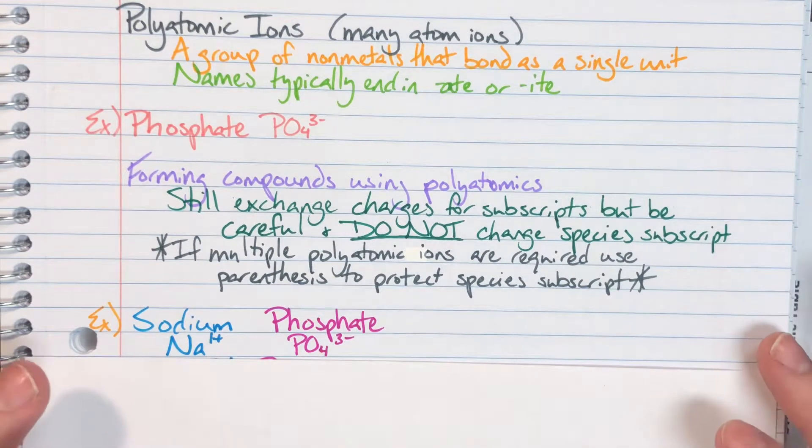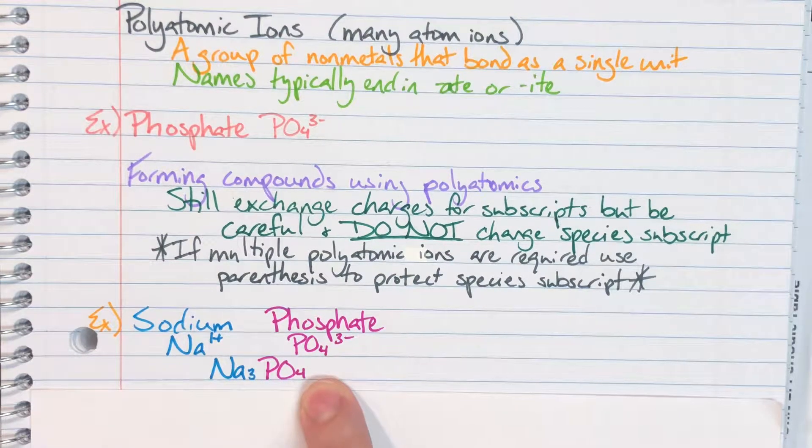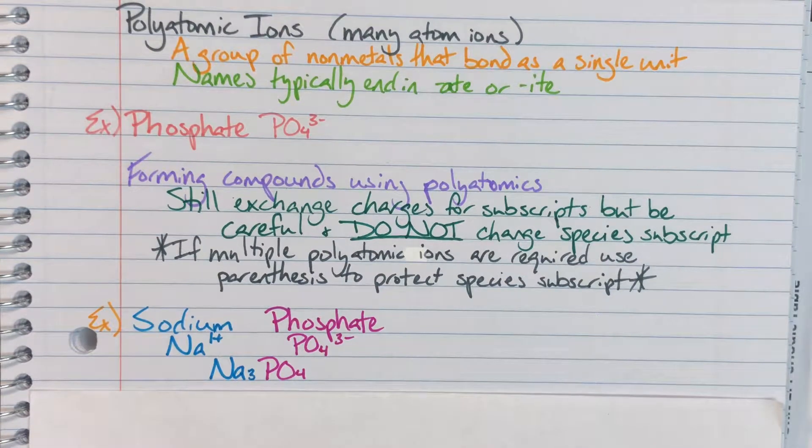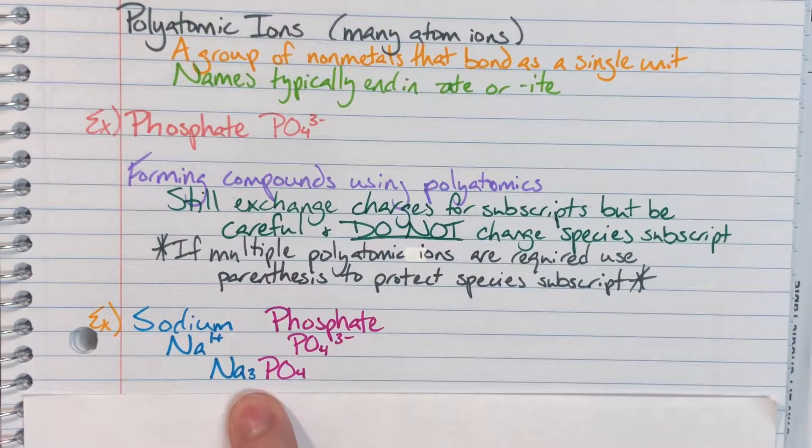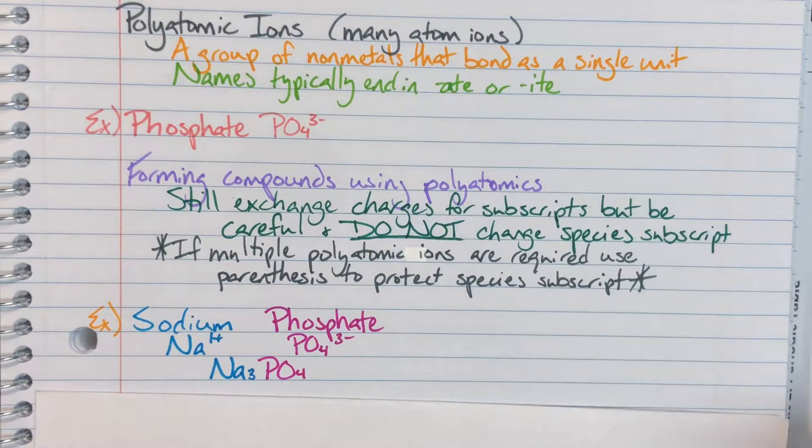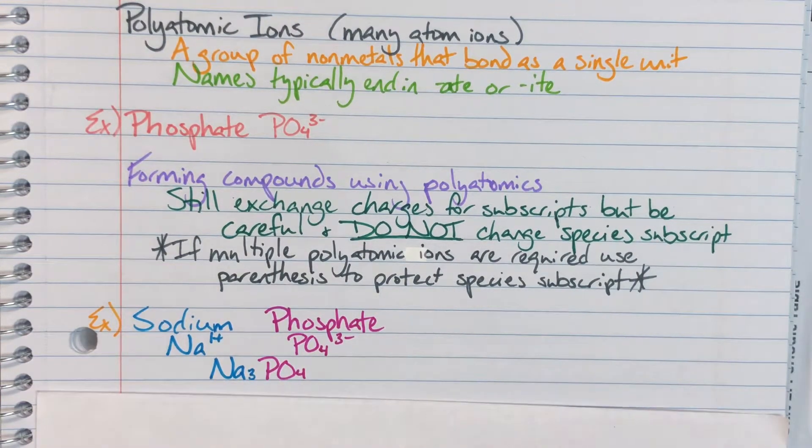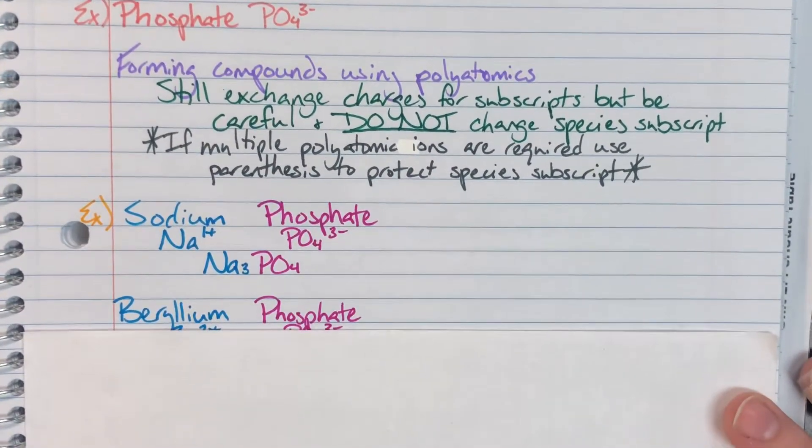Now when I exchange charges for subscripts, I am going to give that one from sodium to phosphate. We do not write ones. The presence of PO4 is in itself a denotation that there is at least one phosphate. Since they function as a singular unit, they do not need that one. They are implied, whereas the phosphate's charge of three will become sodium subscript of three. Now this is an example where I do not need parentheses where I have just a singular phosphate that is necessary, but I am going to go ahead and show you what it would look like if I did need multiple phosphates.